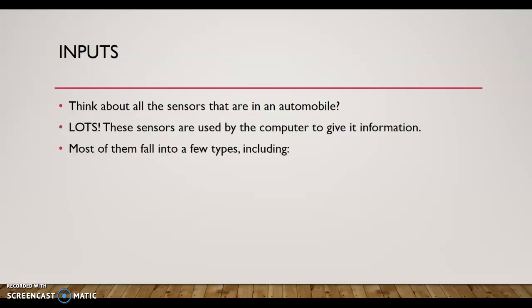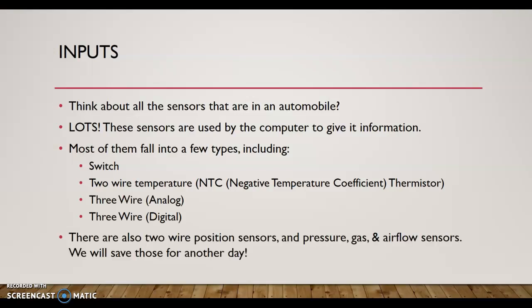Most of these sensors fall into a few types, including switch, two-wire temperature NTC (negative temperature coefficient) thermistor, three-wire analog, and three-wire digital. Of course there are also two-wire position sensors, pressure, gas, airflow sensors. Those are going to have to be saved for another day. This is an intro into inputs and outputs, so I chose some simpler circuits that are broad, meaning many components, many sensors use those four categories.